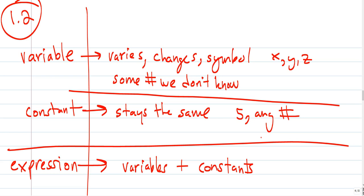It's something that varies. A variable, it varies. It changes. In mathematics, we use a symbol for that. XYZ, it stands for some number we don't know. It varies.